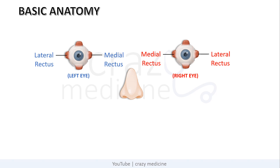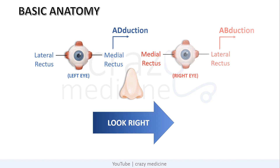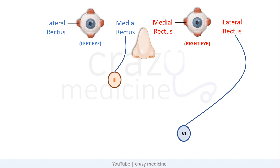Let us learn with the help of an example. In order to look right, we must use the lateral rectus of the right side, which will cause abduction of the right eye, and medial rectus of the left eye, which will cause adduction of the left eye. These both muscles are innervated by different cranial nerves. Lateral rectus is innervated by the 6th cranial nerve, i.e. abducens nerve, and medial rectus by the 3rd cranial nerve, i.e. oculomotor nerve, of the respective sides.